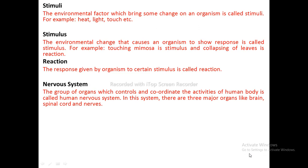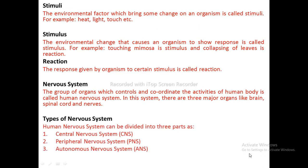Nervous System: The group of organs which controls and coordinates the activities of the human body is called the human nervous system. In this system there are three major organs: brain, spinal cord, and nerves. The human nervous system can be divided into three types: central nervous system, peripheral nervous system, and autonomic nervous system.